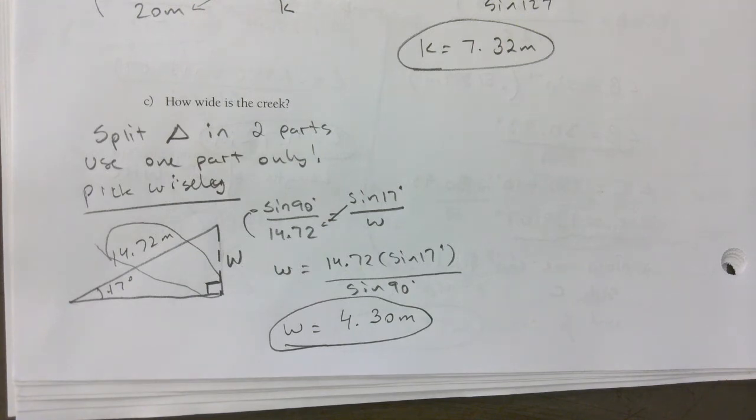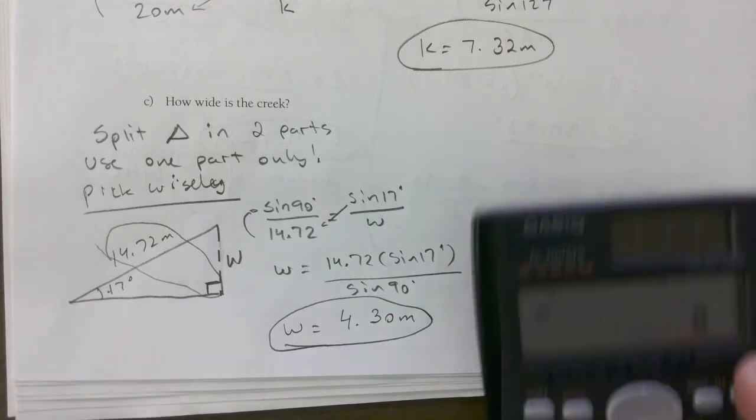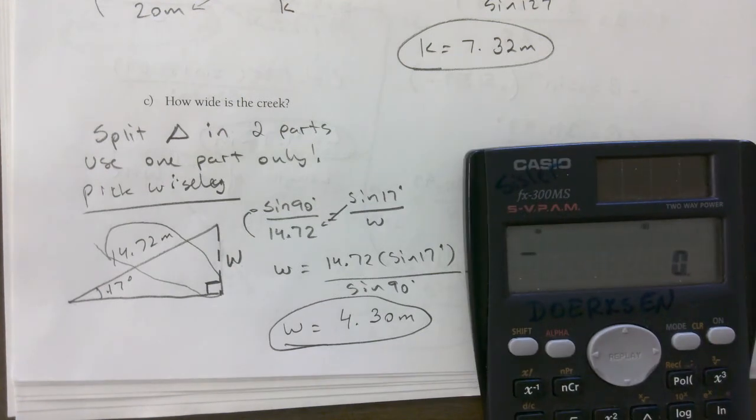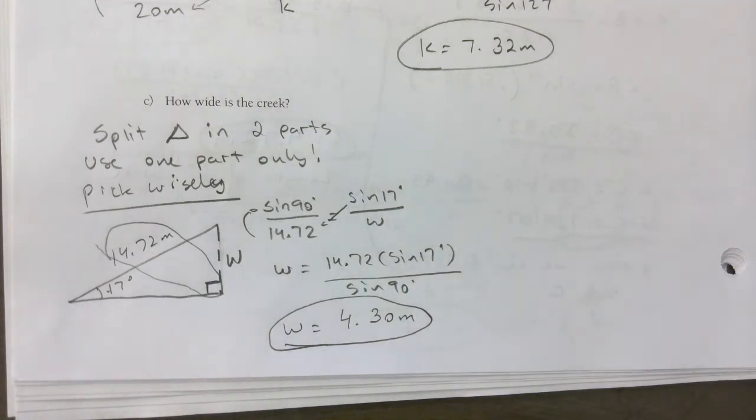A couple things here. Type in sine of 90 and see what you get. Or 90 sine for some of you. You'll get 1. So that's why nothing changes when you divide by sine of 90, because it's 1.